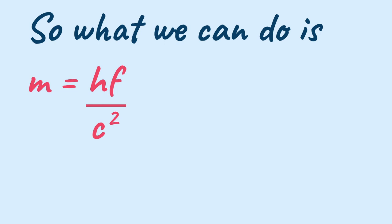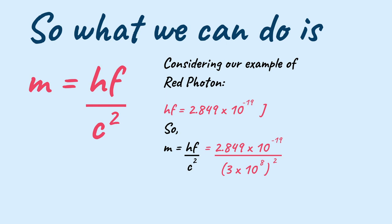So now what we can do is we can get the value of M by transposing C square to the other side and when we do so we get the value as M equals HF upon C squared. So now if we consider our example of the red photon that we took earlier, we can just substitute the values of HF and C squared. We can just write HF equals 2.849 into 10 to the power minus 19 joules and C squared equals 3 into 10 to the power 8 squared.